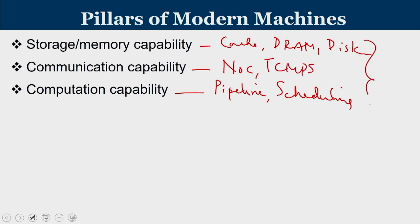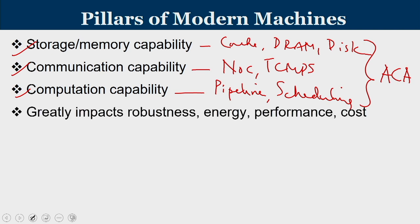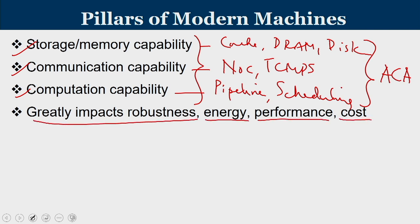We also talked about the communication capability in terms of NoC and TCMPs. Our entire 8-week course on advanced computer architecture was giving you a flavor of how computation capability, storage and memory capability, and communication capability should be designed. These three aspects — how the computation unit is designed, how memory is organized, and what the communication system's capabilities are — greatly impact robustness, energy consumption, performance, and cost of executing applications.